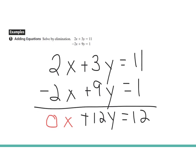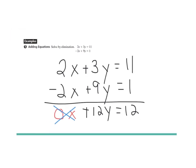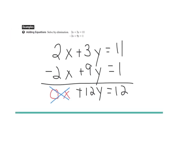We've eliminated one variable. This is gone. So now we have a one-step equation that we can solve. y equals 1.